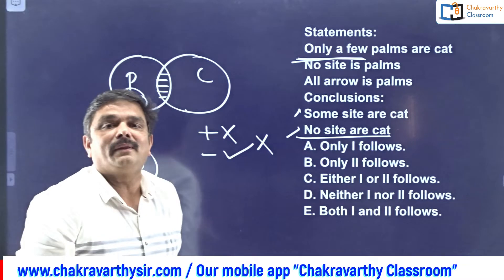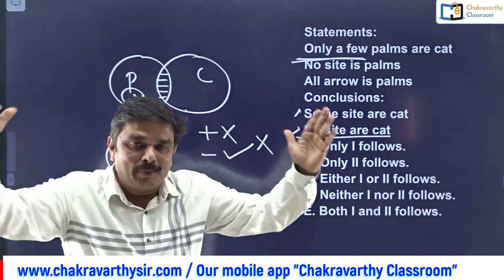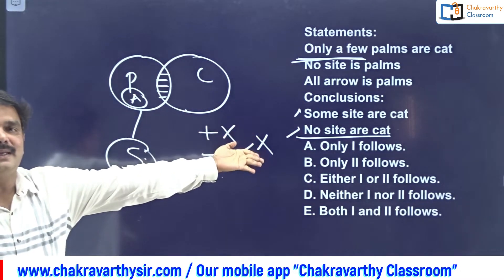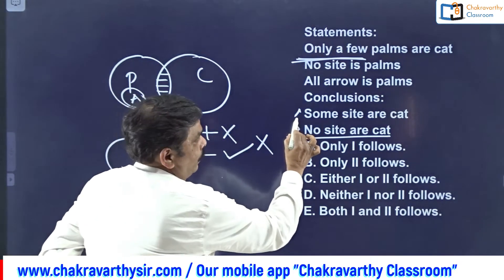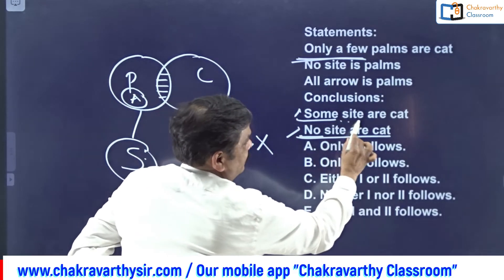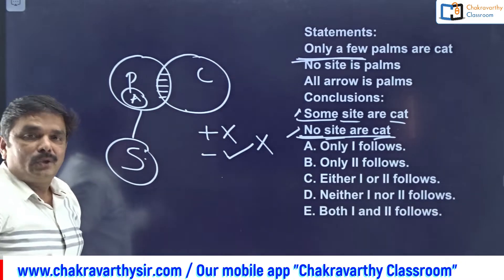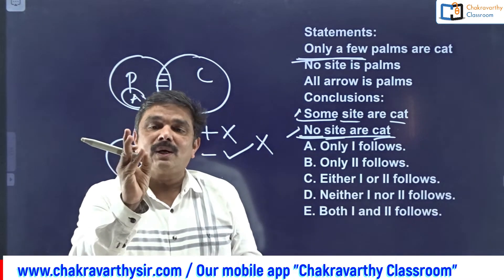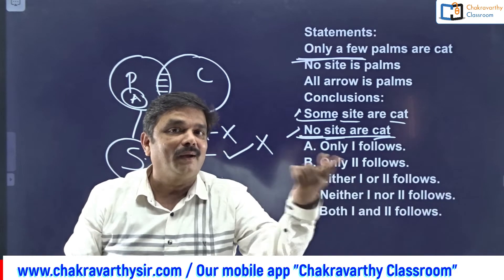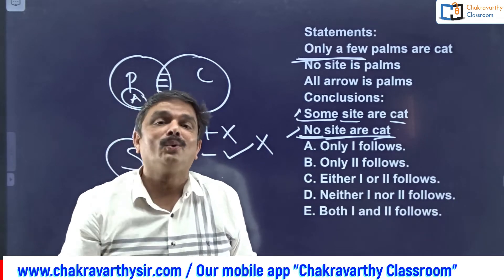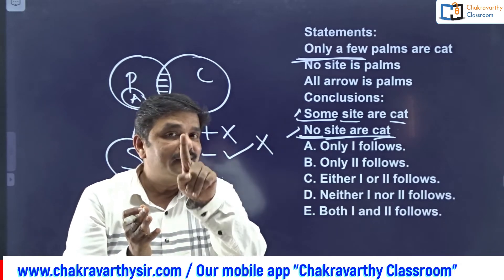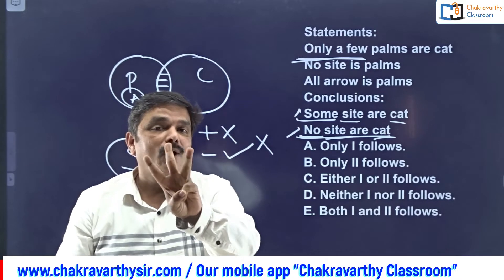Now observe: qualifier for conclusion one is 'some', qualifier for conclusion two is 'no' - this is a complementary pair. Subject and predicate: site, cat and site, cat - yes, they match. The three complementary pairs are: some and no; some-not and all; and some and some-not. Many students do not know all three. These two conclusions form a complementary pair, so the answer is the either-or case.